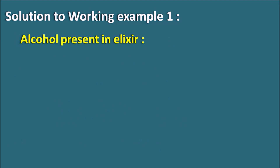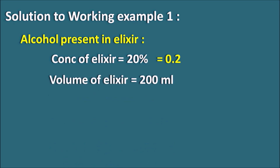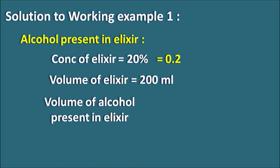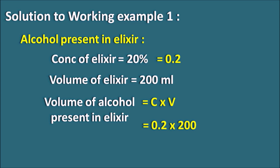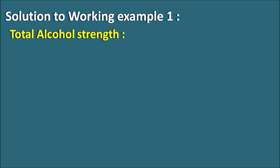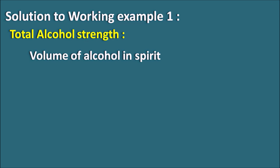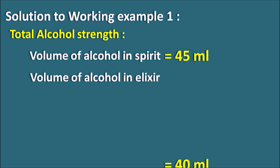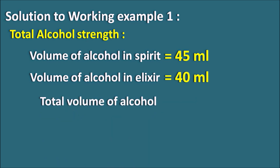Similarly, let us calculate the alcohol present in the elixir. The concentration of the elixir is 20%, which is 0.2 volume by volume, and the volume of the elixir is 200 ml. The volume of alcohol present in the elixir is concentration × volume = 0.2 × 200 = 40 ml. So 40 ml of alcohol is present out of 200 ml of elixir. This elixir is combined with the spirit to prepare 500 ml of formulation.